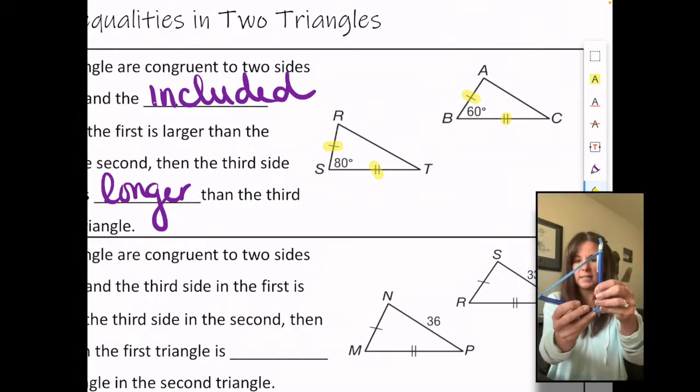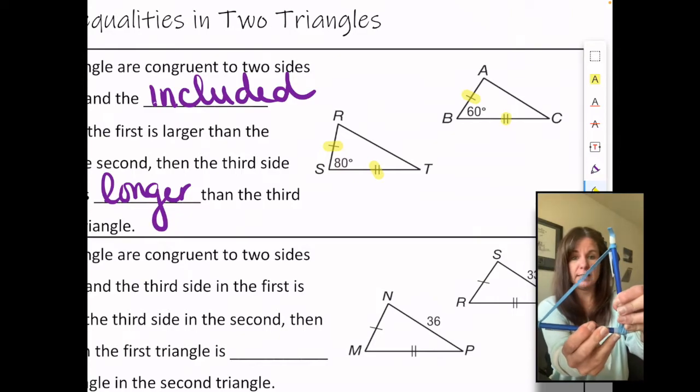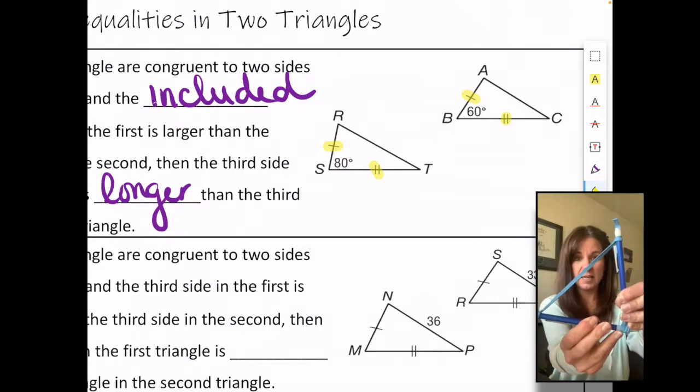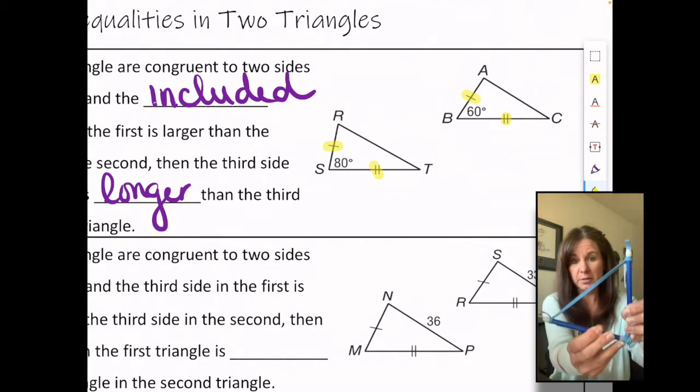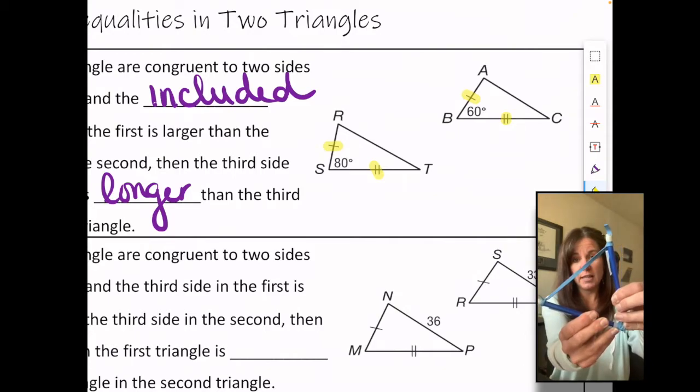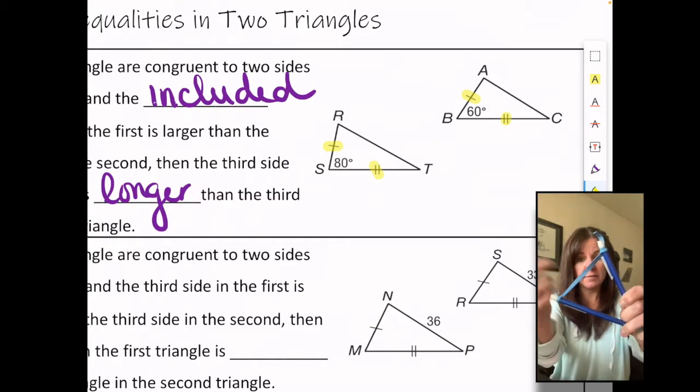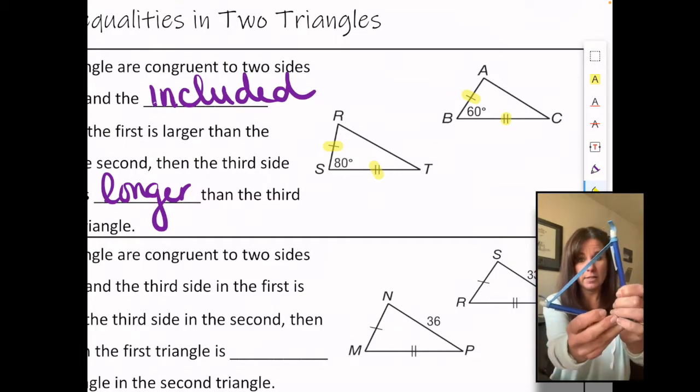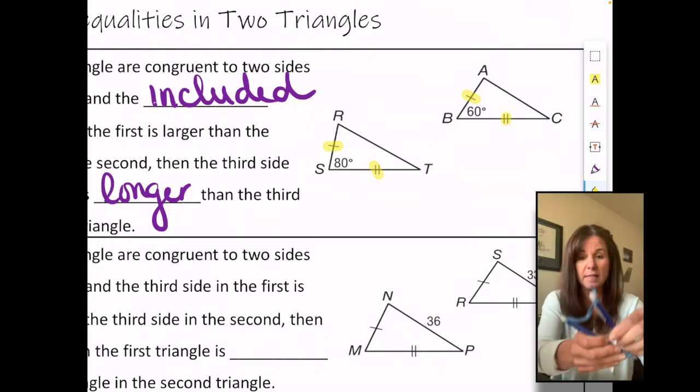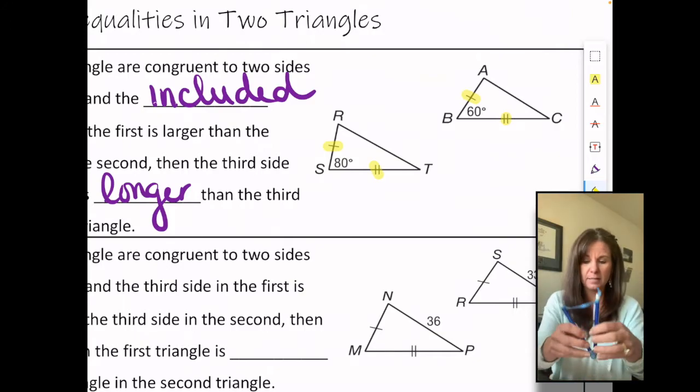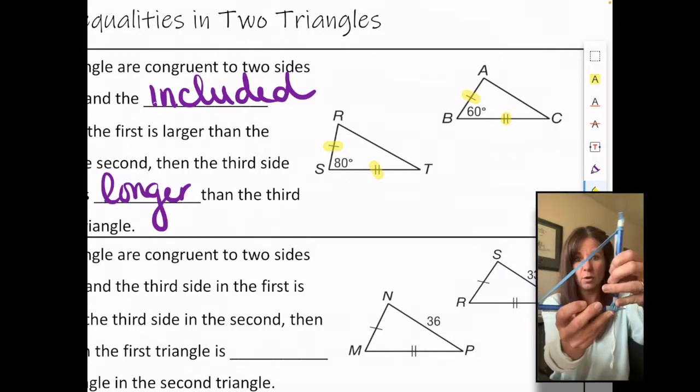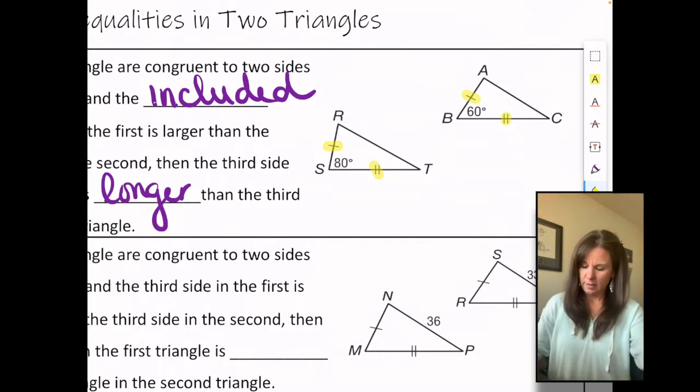So let's say this is triangle RST and I'm not going to change the lengths of the sides, and let's say that this right here is 80 degrees. If I don't change anything except for that angle and now I make it 60 degrees, the side across from it gets smaller. So see the side across from it is bigger with 80 degrees, smaller with 60 degrees. This is called the hinge theorem because the angle is on a hinge like opening the door.